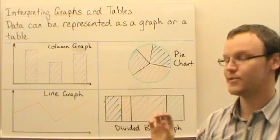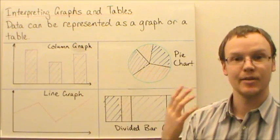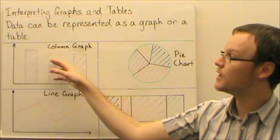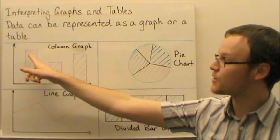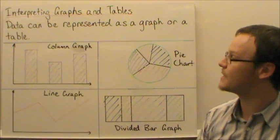So here we've got four different types, some examples. A column graph shows very easily the comparison between different values. So this value here is the greatest value and this is the least value here.